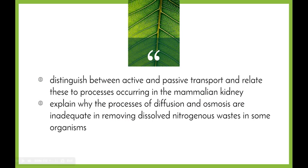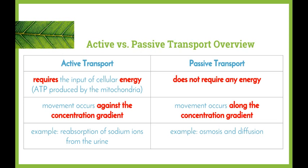This next video in our Maintaining a Balance series will be looking at the dot points: distinguishing between active and passive transport and relating these two processes occurring in the mammalian kidney, and explaining why the processes of diffusion and osmosis are inadequate in removing dissolved nitrogenous wastes in some organisms. We're going to start off with a quick overview of what active and passive transport is.